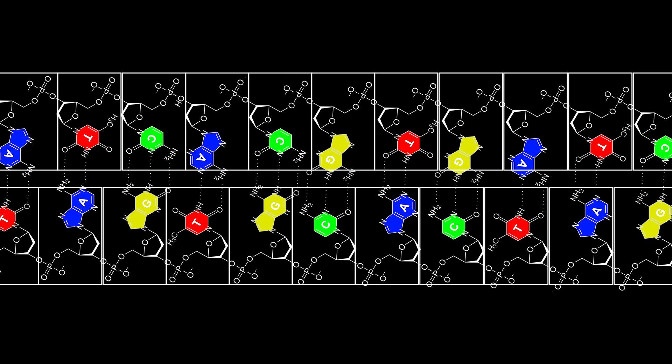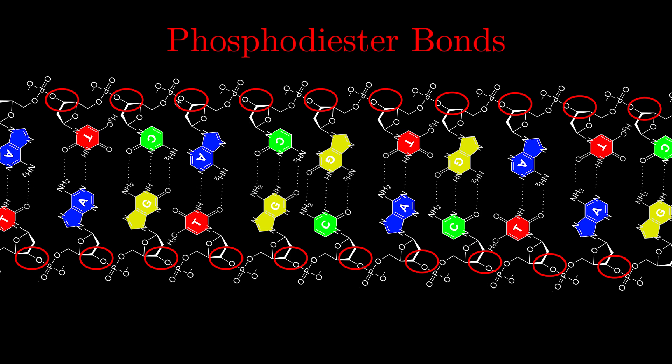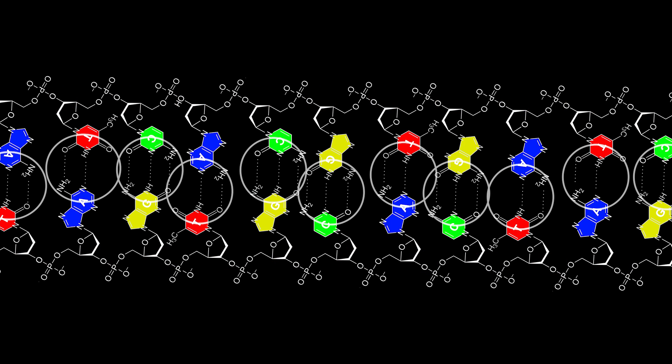The nucleotides combine together by forming covalent bonds between the phosphate group of one nucleotide and the sugar of the next nucleotide, so these bonds are appropriately called phosphodiester bonds. And notice that the two strands interact with each other as well.